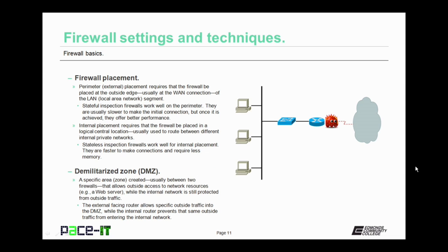It's time to discuss firewall placement, beginning with perimeter placement. This requires that the firewall be placed at the outside edge, usually at the wide area network connection of the local or LAN segment. Stateful inspection firewalls work well on the perimeter. They are usually slower to make the initial connection, but once that connection is achieved, they offer better performance.